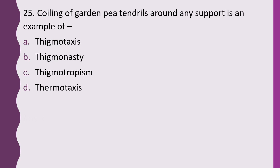Question 25. Coiling of garden pea tendrils around any support is an example of: thigmotaxis, thigmonasty, thigmotropism, or thermotaxis. The correct answer is option C, thigmotropism.